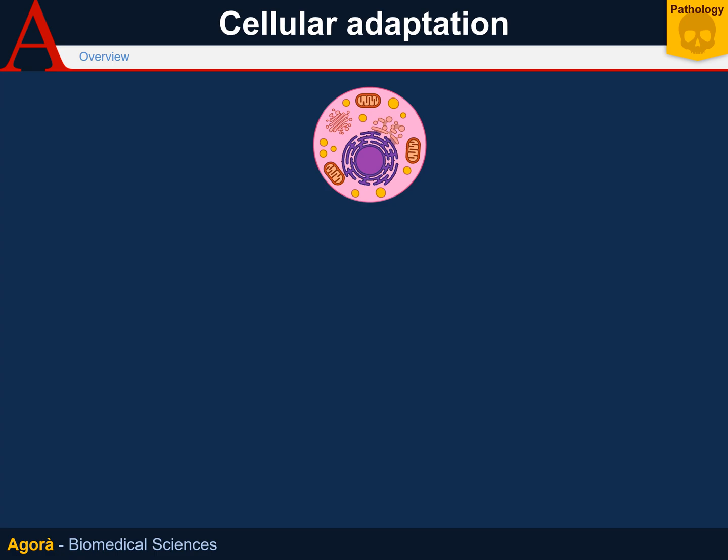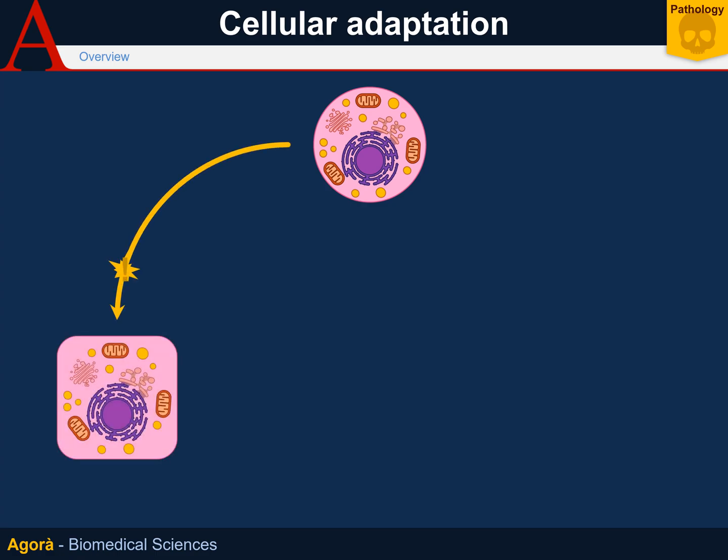Let's start with the general outline of cellular adaptation. Cellular adaptation is a phenomenon that refers to some changes in its characteristics made by a cell to better resist in response to a damaging stimulus. By eliminating the damaging stimulus, this phenomenon is fully reversible.